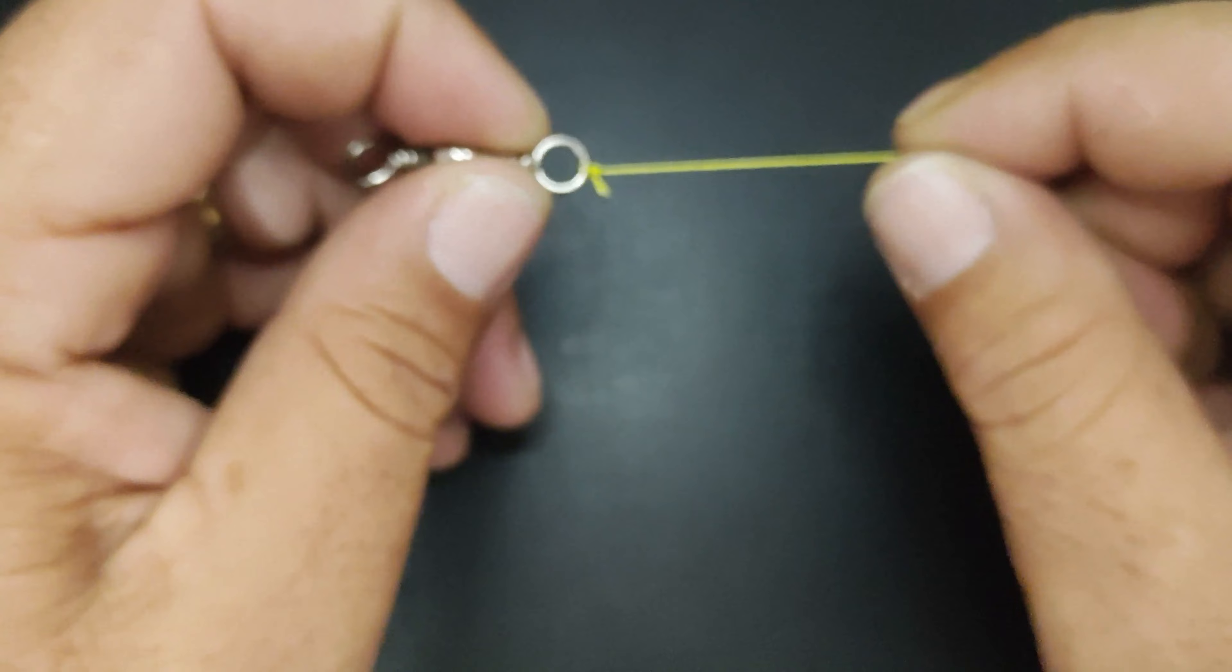Aqui. Aí você vai dar seis giros no eixo aqui, segurando o snap, o anzol. Um, dois, três, quatro, cinco, seis. Se a sua linha é mais fina, pode dar sete, né? Mas o padrão é seis desse nó aqui.